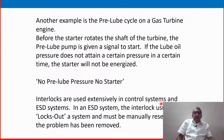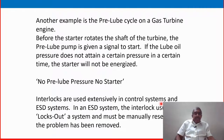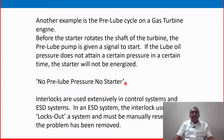Another example is the pre-lube cycle on a gas turbine engine. Before the starter rotates the shaft of the turbine, the pre-lube pump is given a signal to start. If the lube oil pressure does not attain a certain pressure within a certain time, the starter will not be energized. That means no pre-lube pressure, no starter. That is the concept — the interlocking mechanism working properly.